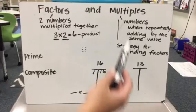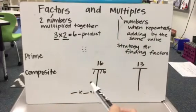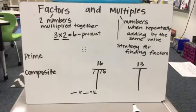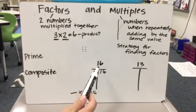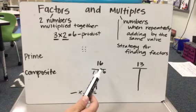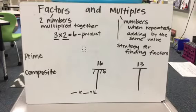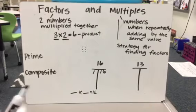So one strategy we use is using multiples. Thinking about how if I repeatedly add a number over and over again, I might be able to get to a product of 16 and then that would be a factor. If your fourth grader knows their multiplication facts and already knows the factors of a number, then they don't need to use this strategy. But if they don't, then this is a strategy they could use.